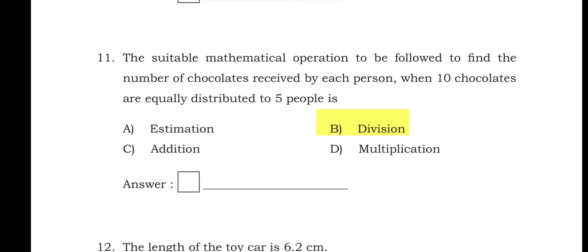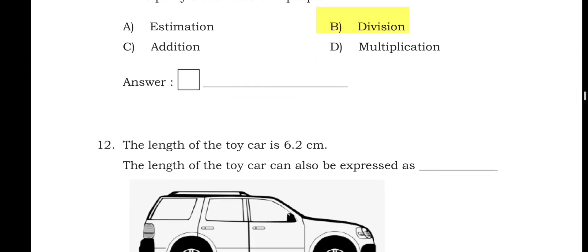Question 11: the suitable mathematical operation to find the number of chocolates received by each person when 10 chocolates are equally distributed to five people is — Option B, division. We divide to get the answer.